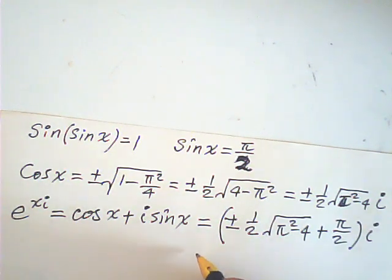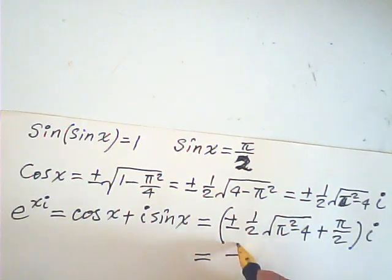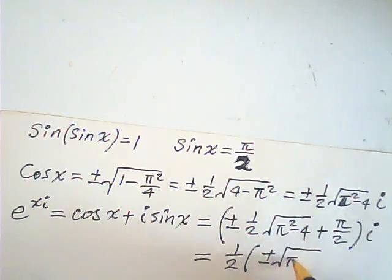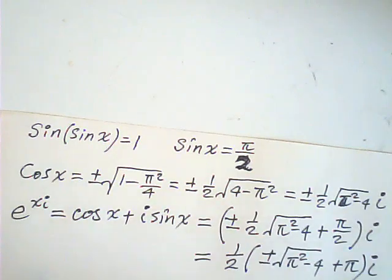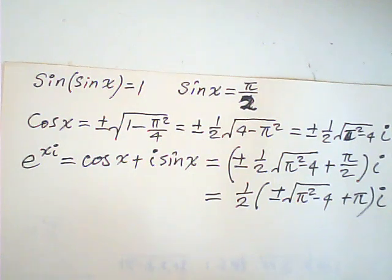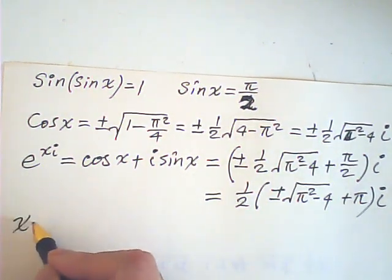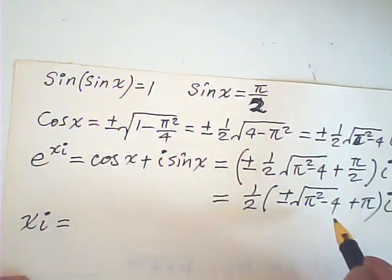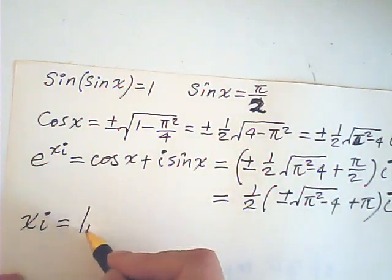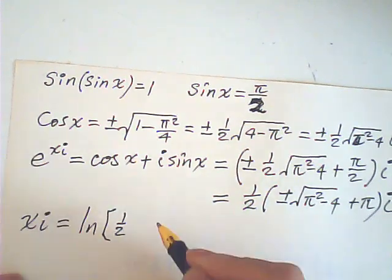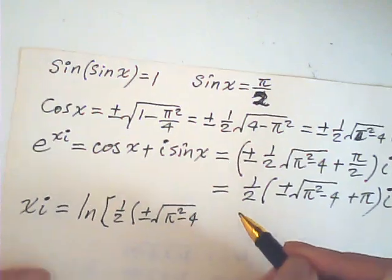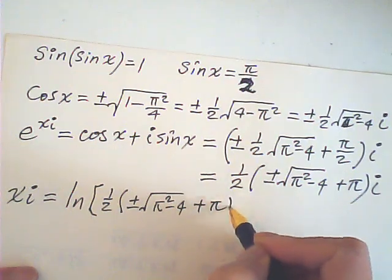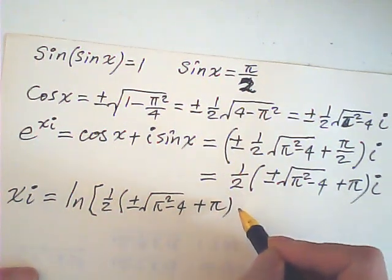I can write this as one half, plus or minus square root pi squared minus 4 plus pi i. Then xi is equal to natural log of one half times plus or minus square root pi squared minus 4 plus pi i.